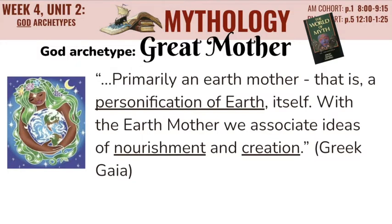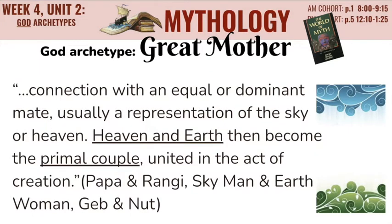Next up, let's look at the Great Mother. The Great Mother is primarily an earth mother — the personification of the earth itself. With the earth mother, we associate nourishment and creation. There is a connection between the Great Mother and an equal or dominant mate, usually a representation of the sky or heaven. Heaven and earth then become the primal couple, united in the act of creation. This is the female power to counterbalance the male power. Typically the sky god falls in love with the earth goddess, as in Papa Rangi, Sky Man and Earth Woman, and the Egyptian Geb and Nut.